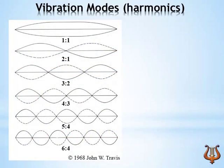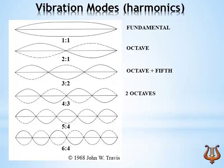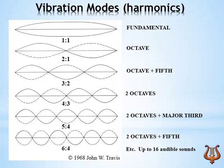Indeed, it vibrates in many different divisions of its length, notably in its two halves, its three thirds, its four quarters, etc. These are called harmonics and each of those harmonics represents a partial of the sound, also called an overtone. The A at 440 Hz is heard because the string vibrates along its whole length. But we also hear the A at 880 Hz, one octave higher, which is called the first harmonic or second partial.